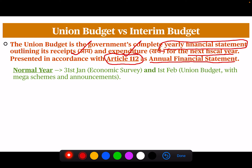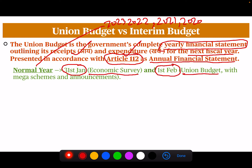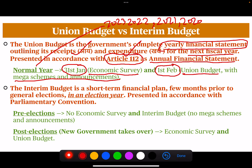If we talk about normal years like 2022-23, 2021-22, 2020-21 — these were normal years because there were no elections. So what happens is on January 31st the economic survey is released, and on 1st February the union budget comes with mega schemes and announcements. But the interim budget is a short-term financial plan presented a few months prior to general elections, like in 2024. So 2024 is an election year.